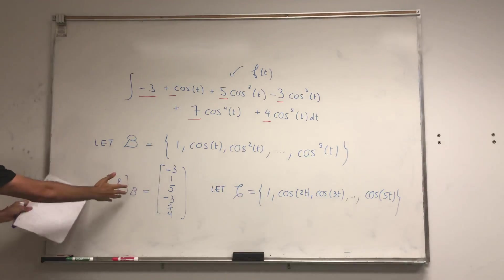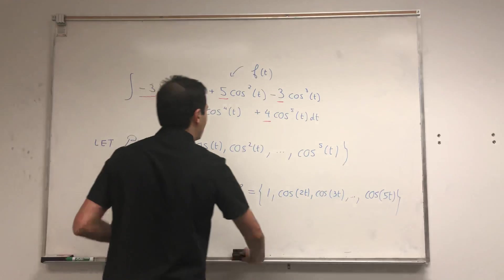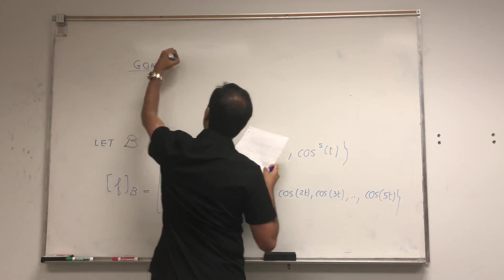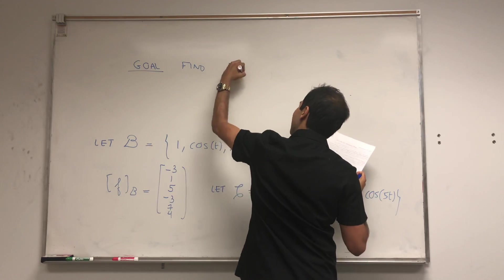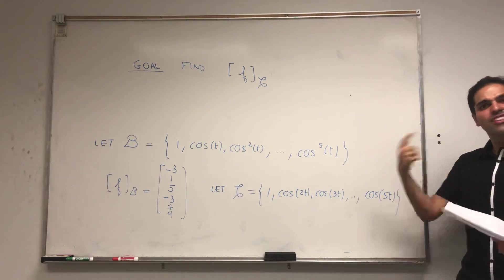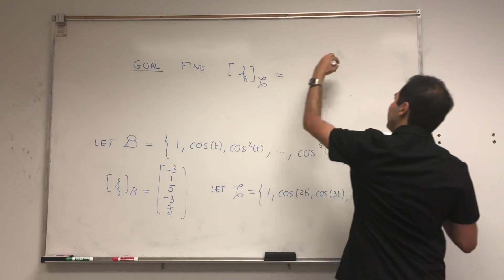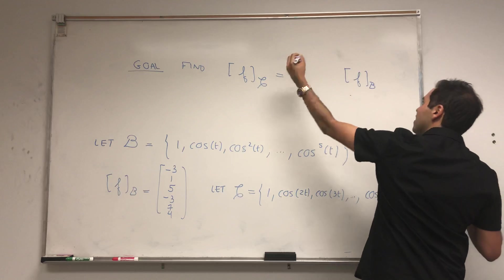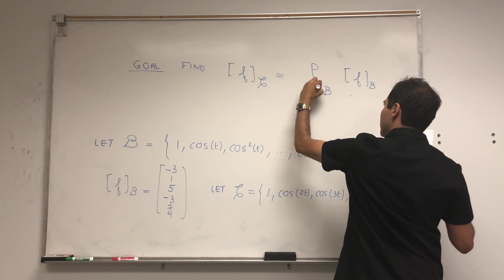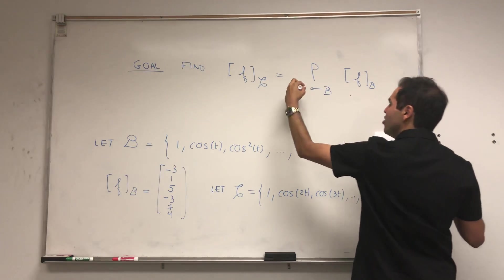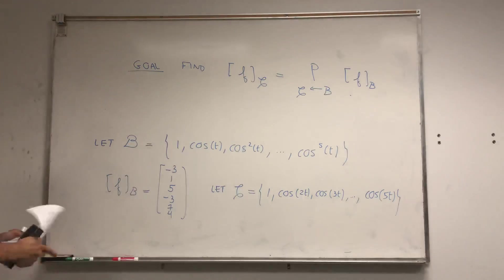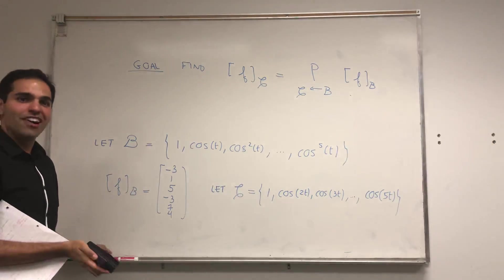The goal is: once we have our original barcode, we want to find a new barcode — that is, the coordinates of f with respect to C. There's an easy way of obtaining those coordinates using the change of coordinates matrix. In terms of our old barcode, the coordinates of f with respect to C equal the change of coordinates matrix (going from B to C) times the coordinates of f with respect to B.